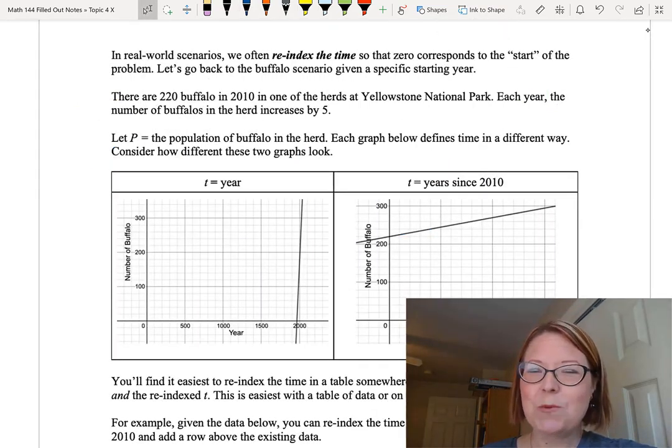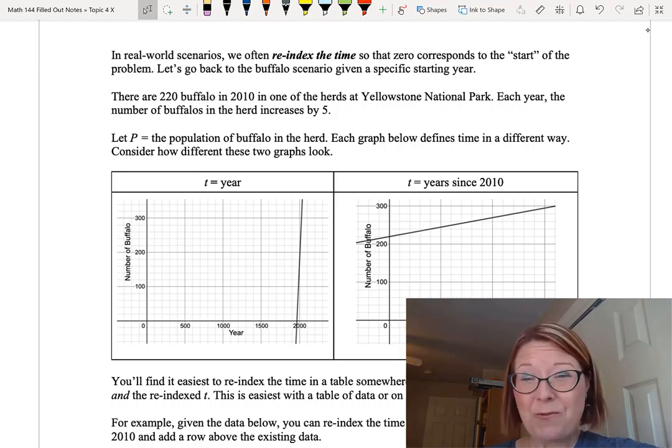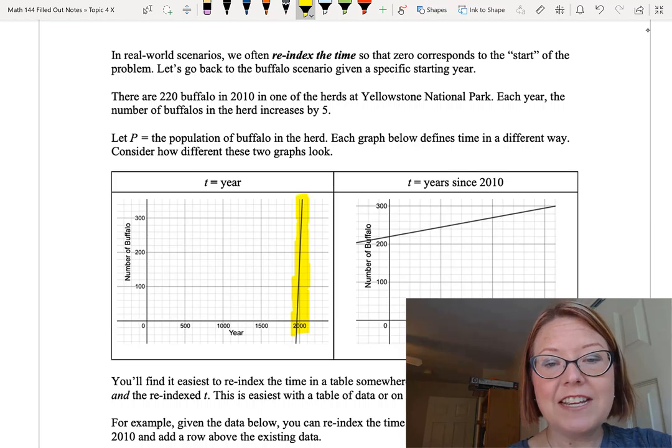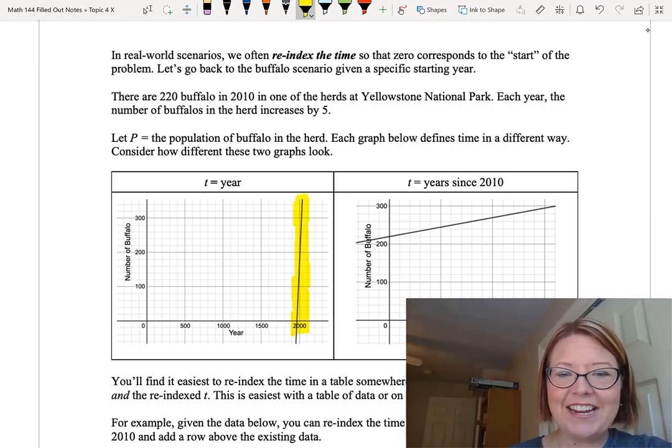Another thing we often do in real world scenarios is we re-index the time so that zero corresponds to the start of the problem, the start of the scenario, or the start of the experiment. Let's go back to that buffalo scenario and look at it with a specific starting year. Here's the new scenario. There are 220 buffalo in 2010 in one of the herds at Yellowstone National Park. Each year the number of buffaloes in the herd increases by five. If I actually graphed this from the year zero, then we would be counting on the horizontal axis by something like five hundreds. We would have zero, 500, 1000, 1500, 2000, and the entire time we're measuring the problem might take place in this tiny little band around the year 2000 with everything else not having data.